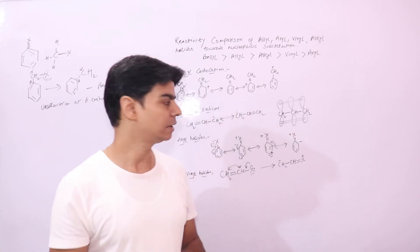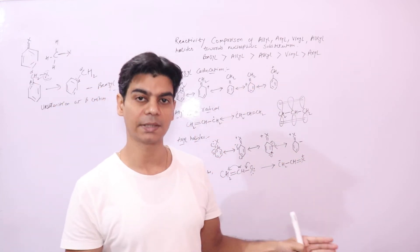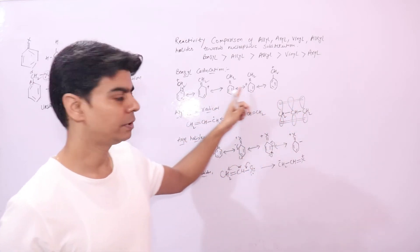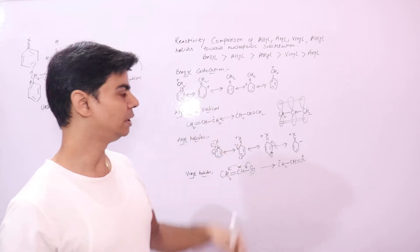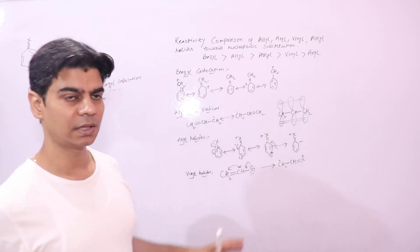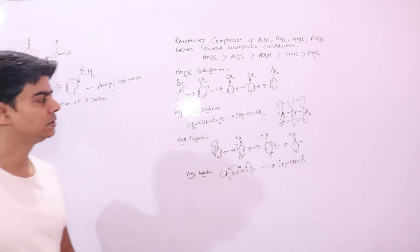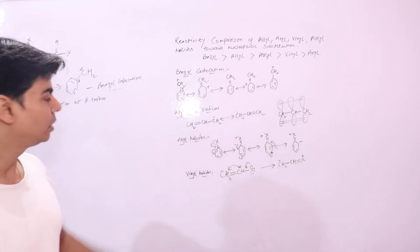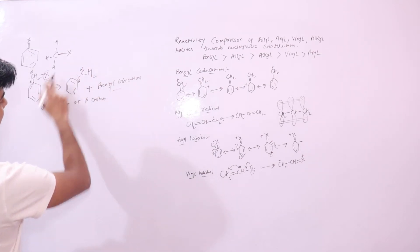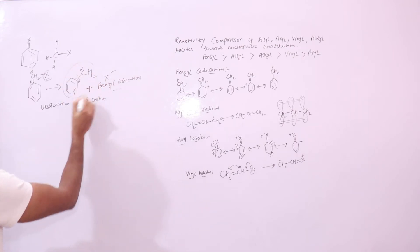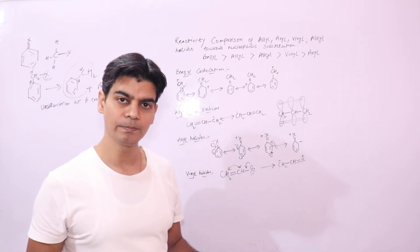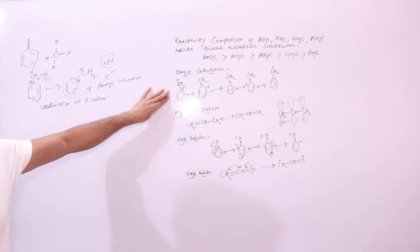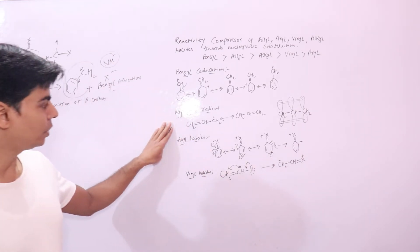Nucleophiles are nucleus-loving — they love these positive sites, so these sites can be easily attacked. These positive sites are developed due to the resonating structures from the benzene ring, which allows delocalization. More resonating structures add to the stability of the benzyl carbocation. So the benzyl carbocation is stable in solution and can easily react with nucleophiles. That is why the benzyl system is most reactive. Now coming to the allyl system.